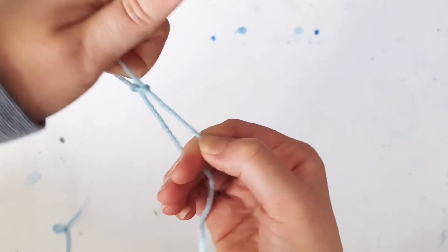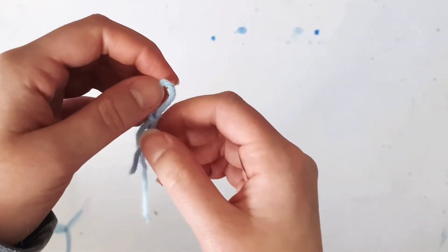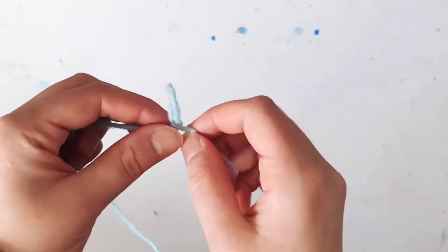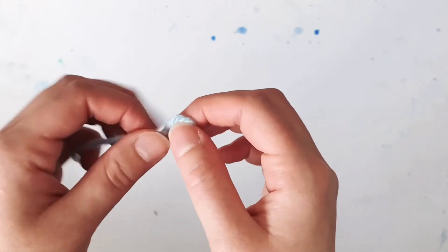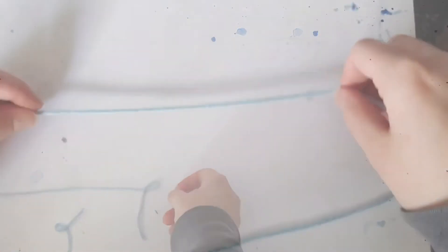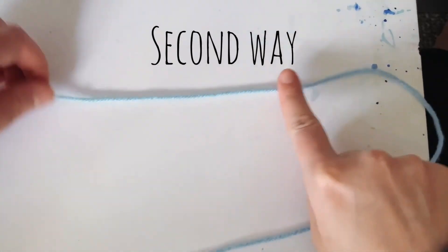You're going to pull it through, and that is going to give you your nice little slip knot. That is the first way. This is the long end, so you're going to take the left end.